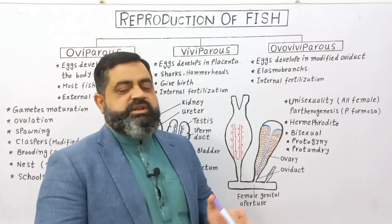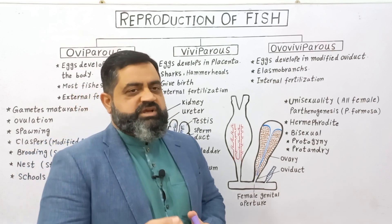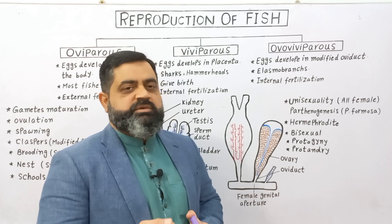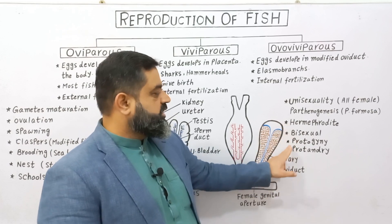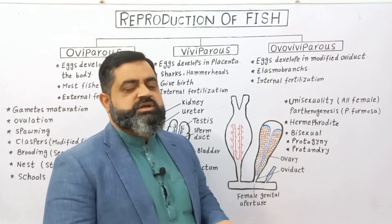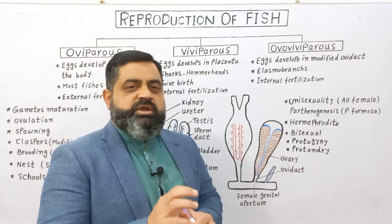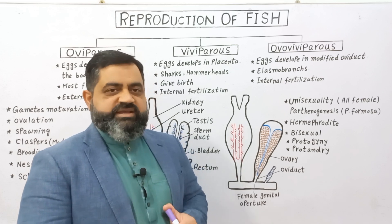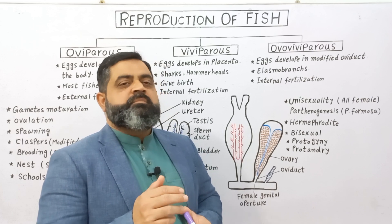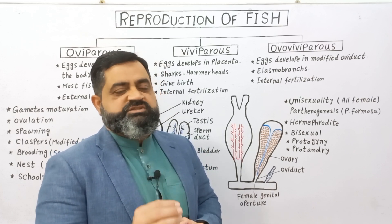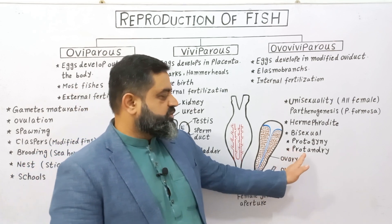Some other fishes are hermaphrodites, meaning they are both male and female at the same time — similar to an earthworm which has both male and female reproductive organs in the same body. There are two conditions in hermaphrodites. The first is protogyny, where the female gonads mature first and produce eggs, then those gonads degenerate and male gonads develop which produce sperms to fertilize the eggs.